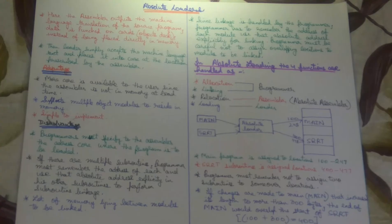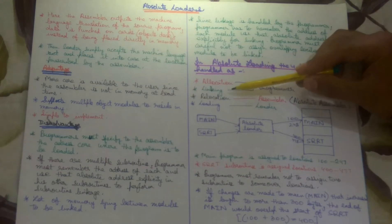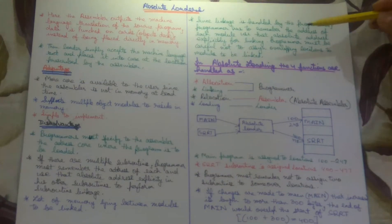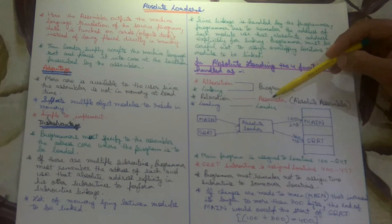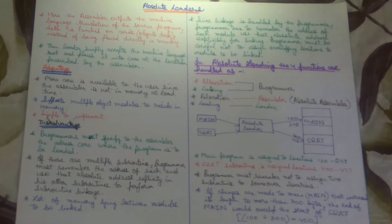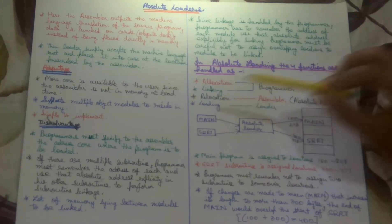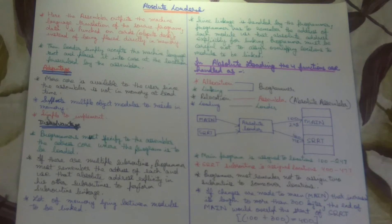This is all about the absolute loaders. The absolute loading process - how to do it? These are the four basic steps which absolute loaders perform: allocation and linking by the programmer, relocation by the assembler, and loading by the loader.